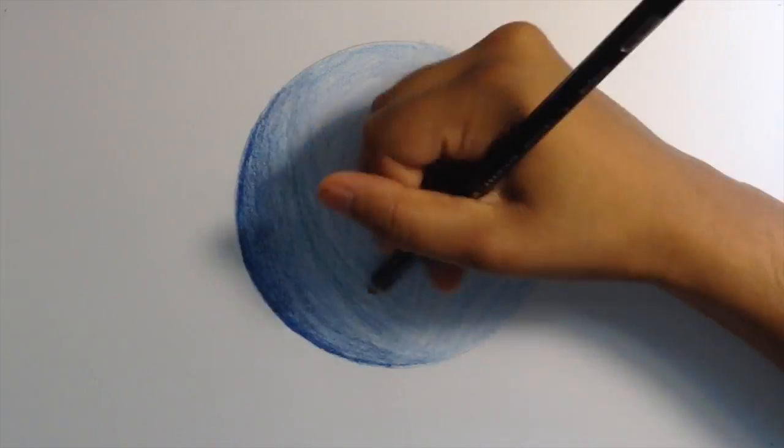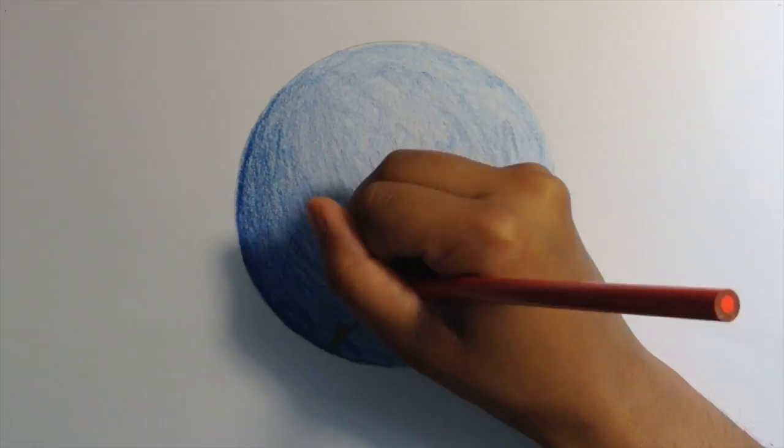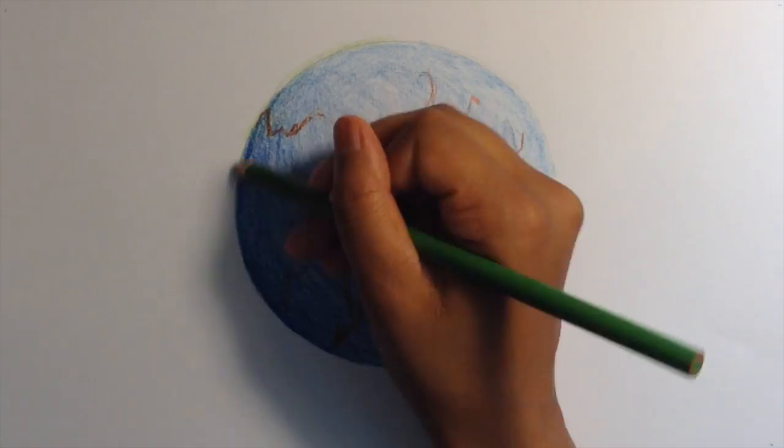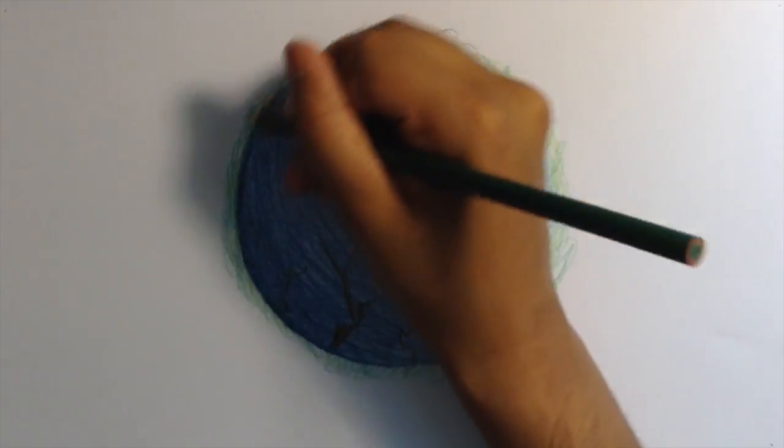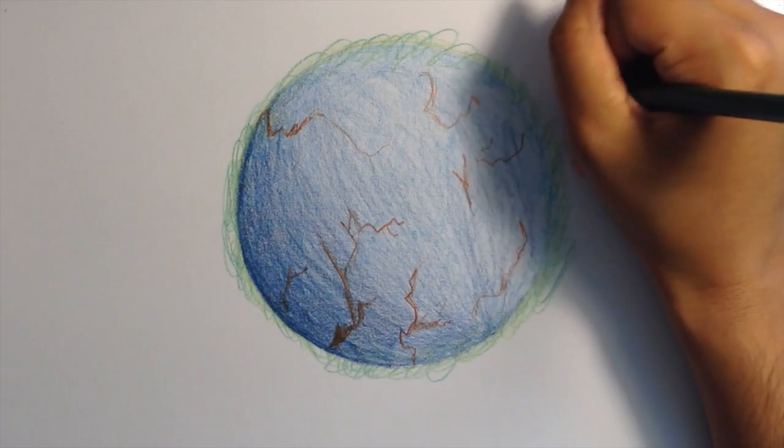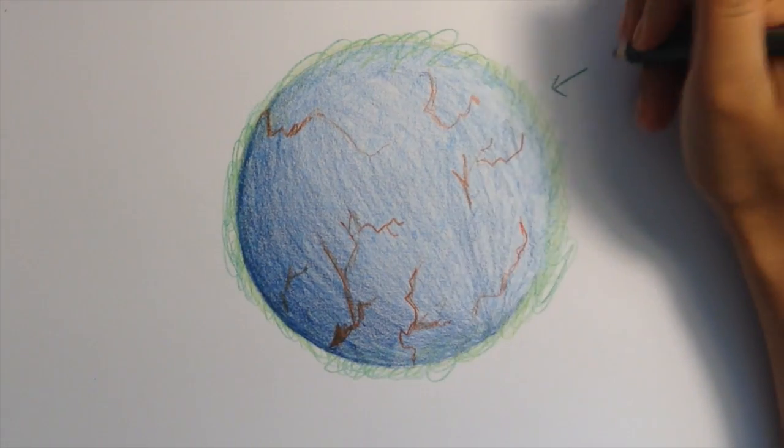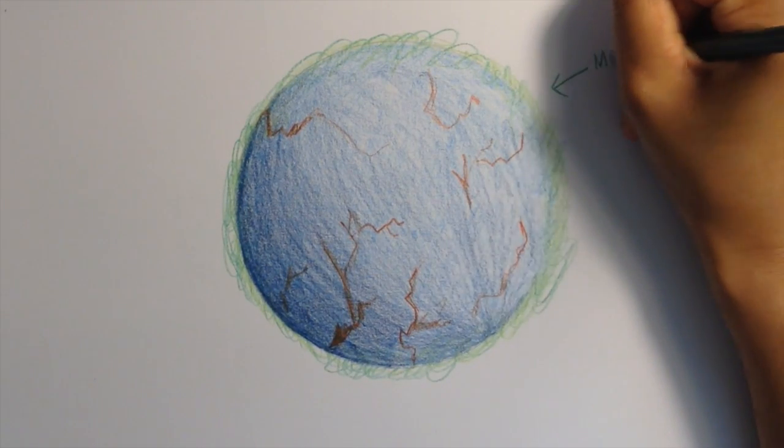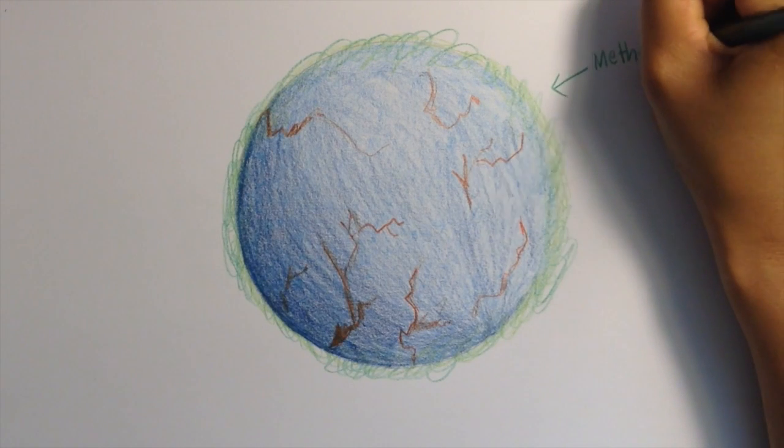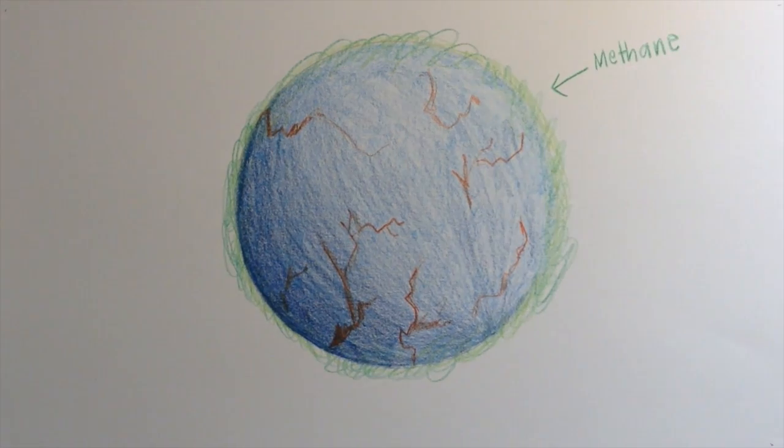It seems likely that methane was the spark for life on Earth 3.5 billion years ago. There was about 1,000 times as much methane in the atmosphere as there is now. Because Earth's earliest life appeared during this time of a methane-rich environment, it's almost a given that methane was the first step of the creation of biochemical pathways on this planet.